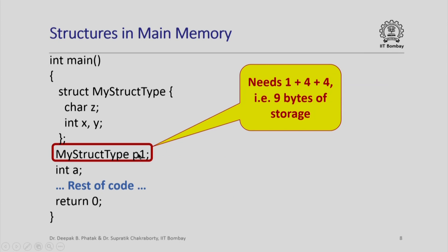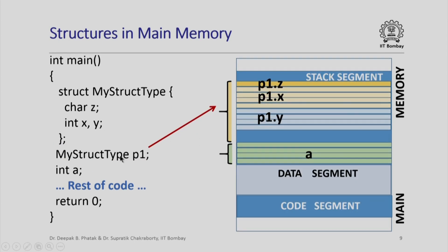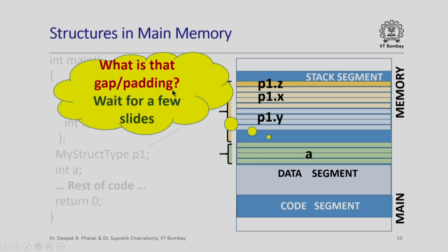Now, how much storage do we need for the variable p1? If you look at the definition of myStructType, you will see that I need one byte for member z and four bytes each for members x and y. Therefore, I need a total of nine bytes of storage. This being a local variable of main, storage for this will be allocated in the activation record for main, which will be stored in the call stack in the stack segment. So in the stack segment, I will have storage for p1, in which a byte is reserved for p1.z and four bytes each for p1.x and p1.y. Note that p1.z requires one byte, p1.x and p1.y require four bytes each, but there is still some gap here — some padding — which we will address in a few slides.